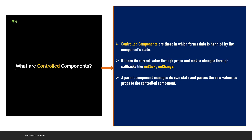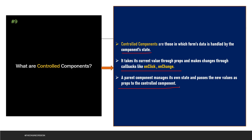The next question is: what are controlled components? Controlled components are those in which form data is handled by the component state. They take their current value through props and make changes through callbacks like onClick or onChange. A parent component manages its own state and passes the new value as props to the controlled component.